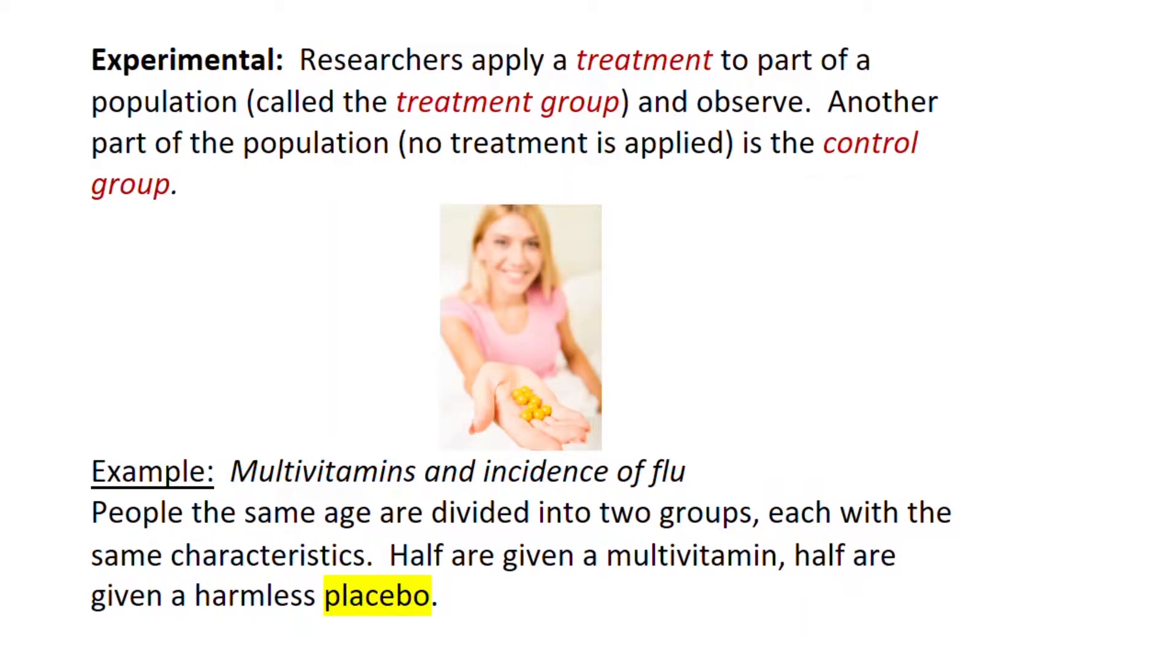One example might be a study observing multivitamins and the incidence of flu. So the researchers may get a group of people the same age, put them into two groups each with the same characteristics, and half are given the multivitamin and half are given the harmless placebo, and their health is observed over time.